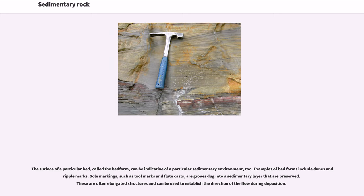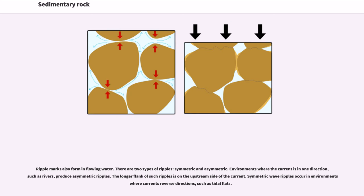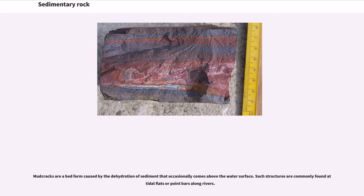Examples of bed forms include dunes and ripple marks. Sole markings, such as tool marks and flute casts, are grooves dug into a sedimentary layer that are preserved. These are often elongated structures and can be used to establish the direction of flow during deposition. Ripple marks also form in flowing water. There are two types of ripples, symmetric and asymmetric. Environments where the current is in one direction, such as rivers, produce asymmetric ripples. Symmetric wave ripples occur in environments where currents reverse directions, such as tidal flats. Mud cracks are a bed form caused by the dehydration of sediment that occasionally comes above the water surface, commonly found at tidal flats or point bars along rivers.